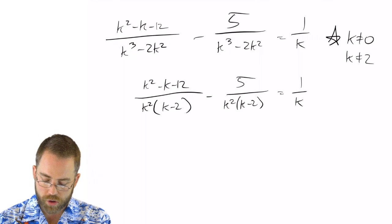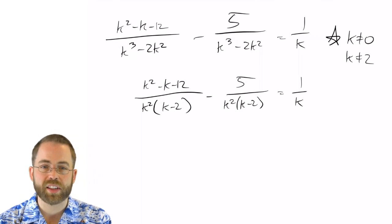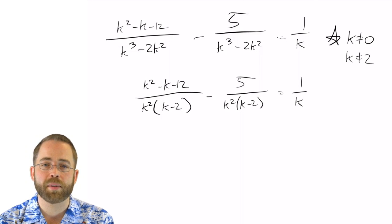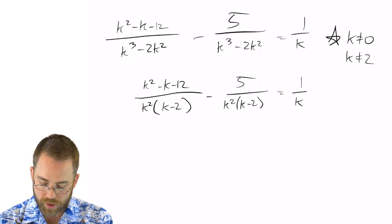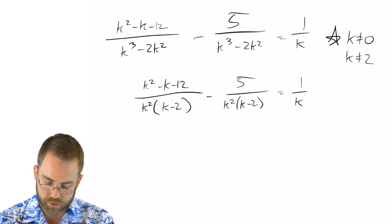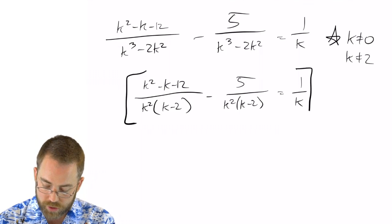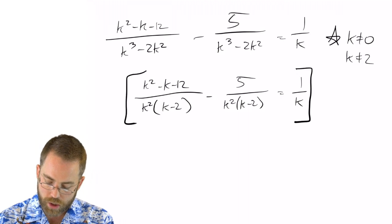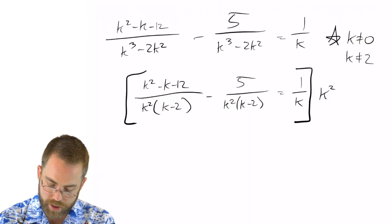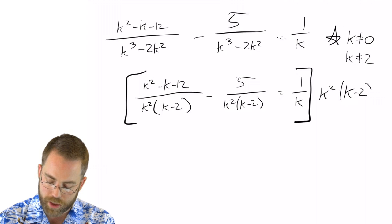Now I could work on solving this and get everybody to have the same denominator, but again, you know my preference. I don't like fractions, so I'm going to multiply—actually, I do like fractions, but I don't like solving this kind with fractions in it. So I'm going to multiply both sides by k squared times k minus 2.